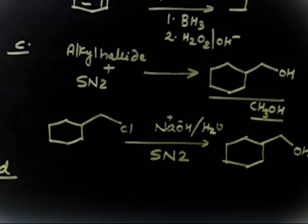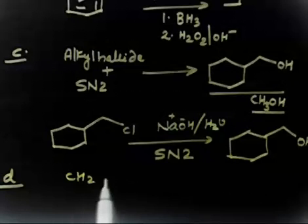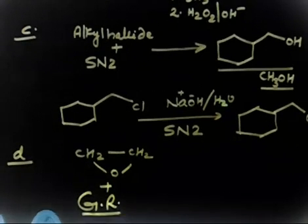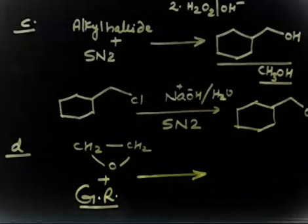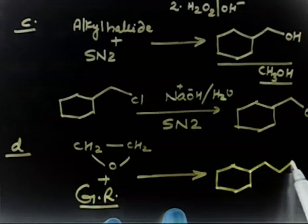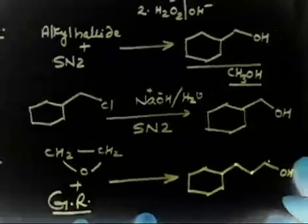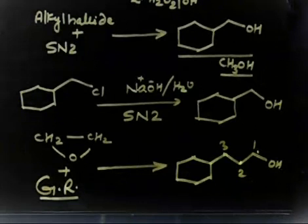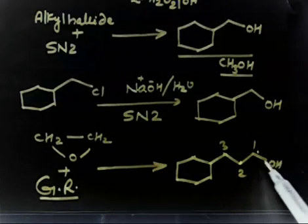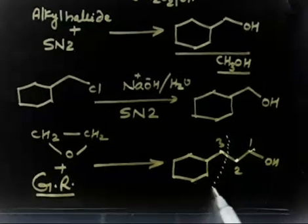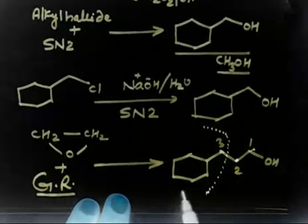Part D: you have to use ethylene oxide plus a Grignard reagent to prepare 3-cyclohexyl-1-propanol. So you have to prepare this compound: propanol, one-two-three, with a cyclohexyl group at position 3. How do you prepare it using a Grignard reagent? Three carbons are present; if you remove the two-carbon unit that comes from ethylene oxide, you must take the remaining part as the Grignard reagent.